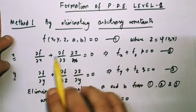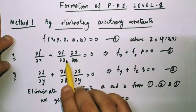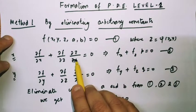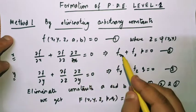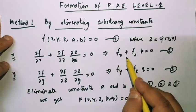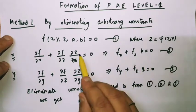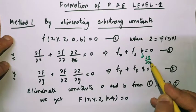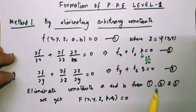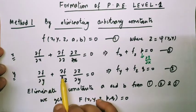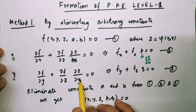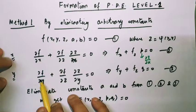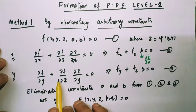Differentiating with respect to x gives: ∂f/∂x + (∂f/∂z)(∂z/∂x) = 0, which can be written as f_x + f_z · p = 0, where p = ∂z/∂x as discussed in previous videos. Similarly, differentiating with respect to y gives: ∂f/∂y + (∂f/∂z)(∂z/∂y) = 0.